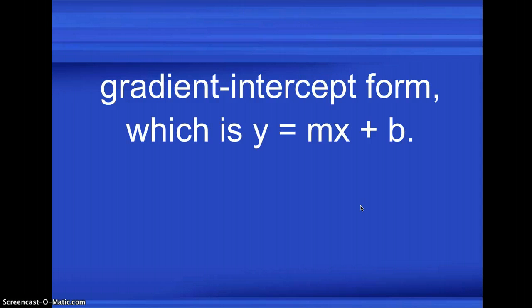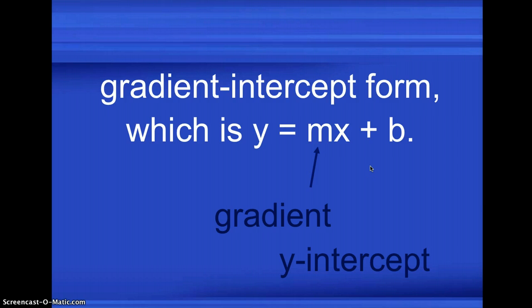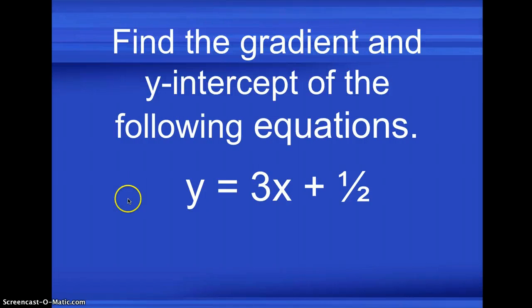What is another way of finding the gradient? If the equation is written in the gradient intercept form, which is Y is equal to MX plus B, X being always the variable. So that M, the coefficient of X will represent the gradient and B is the Y intercept. So for example, you are given this equation. You look at the equation, the equation is in the form of Y is equal to MX plus B or Y intercept.